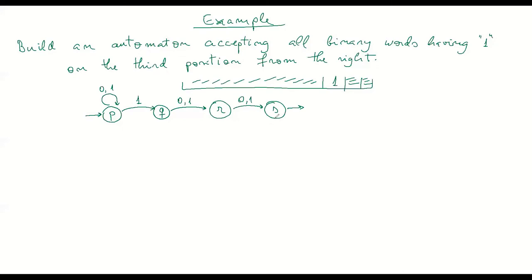I don't specify further transitions from the final state. If there were more letters to read while in that state, the computation is undefined — which is allowed in non-deterministic automata. The key conceptual difference from deterministic automata is at state p: when reading a 1, there are two transitions — staying in p (meaning 'I don't think this is the third from the right, I keep waiting') or moving to q (meaning 'I believe this is the third from the right'). You have two possibilities and don't know which to take, so you must check all.